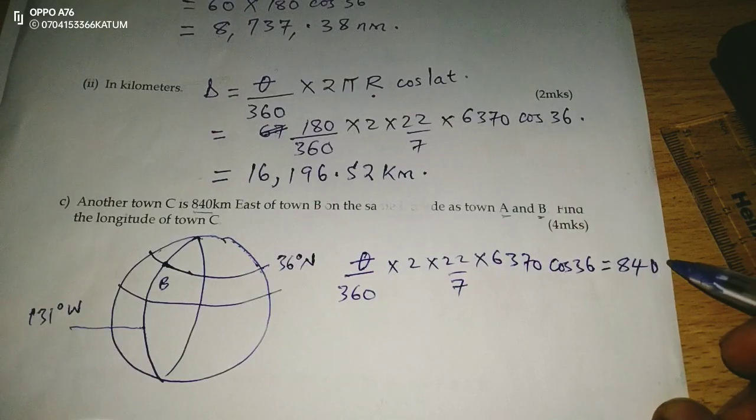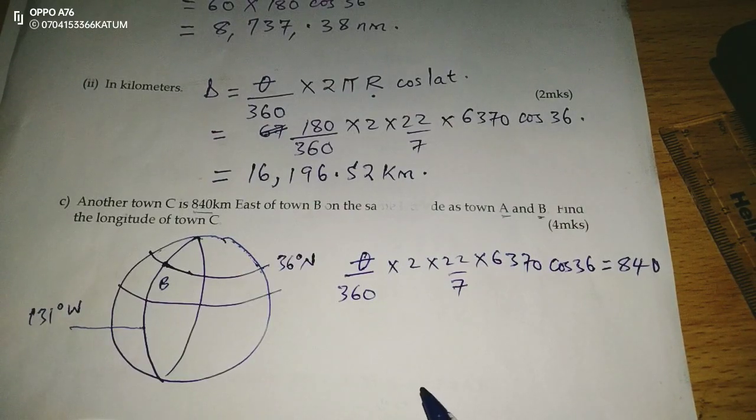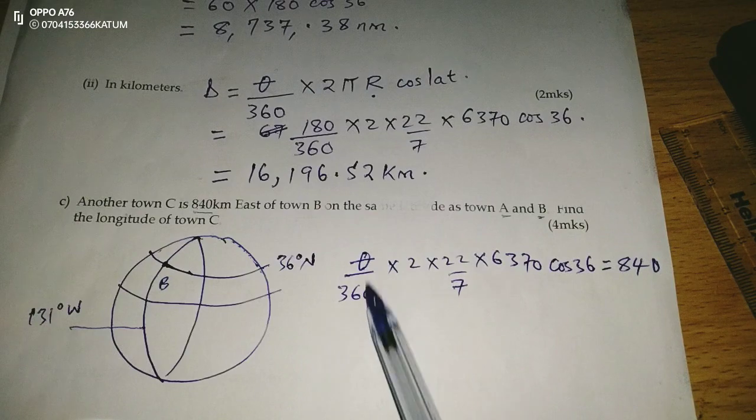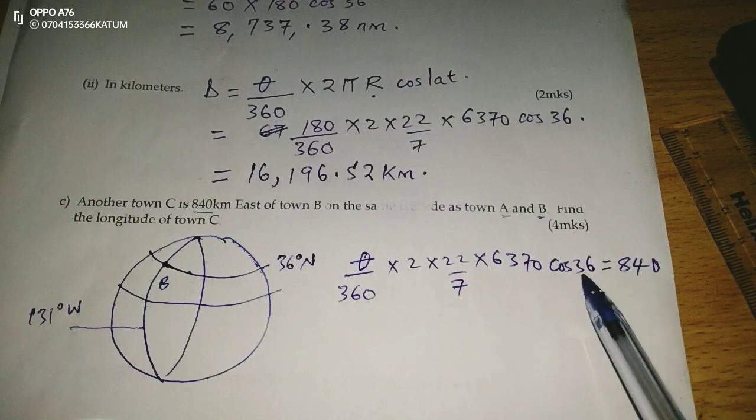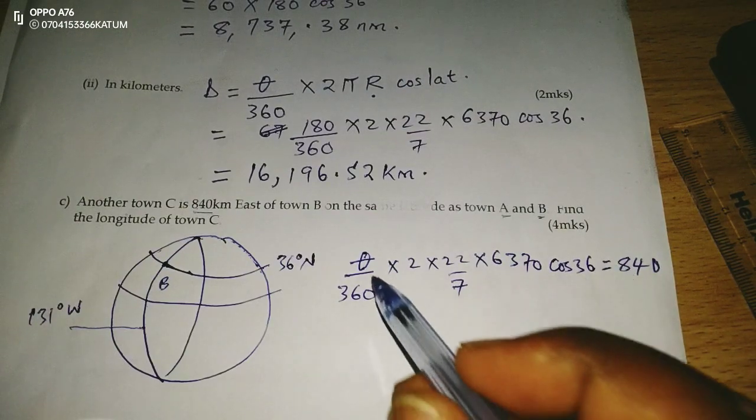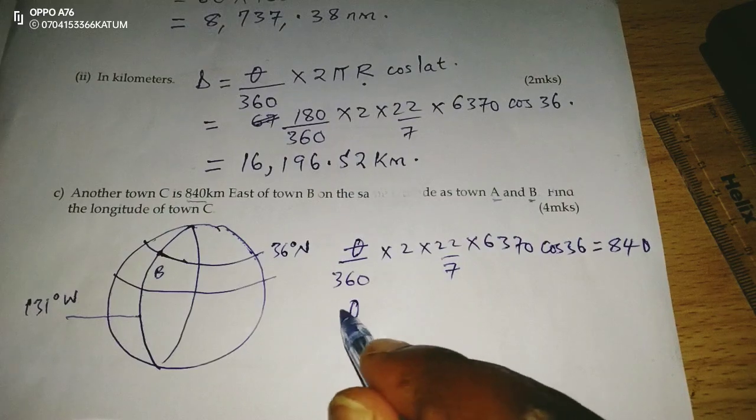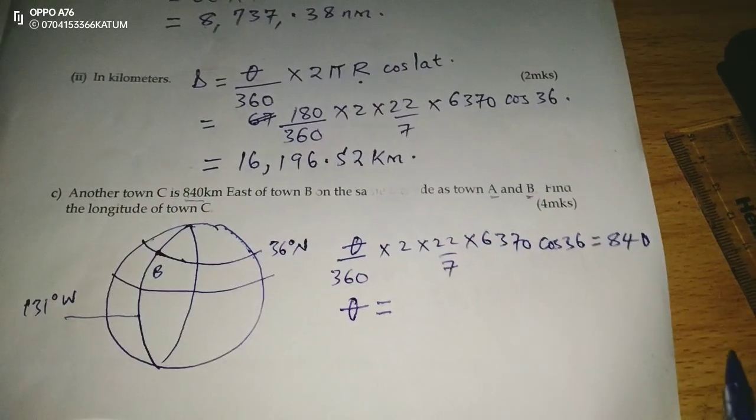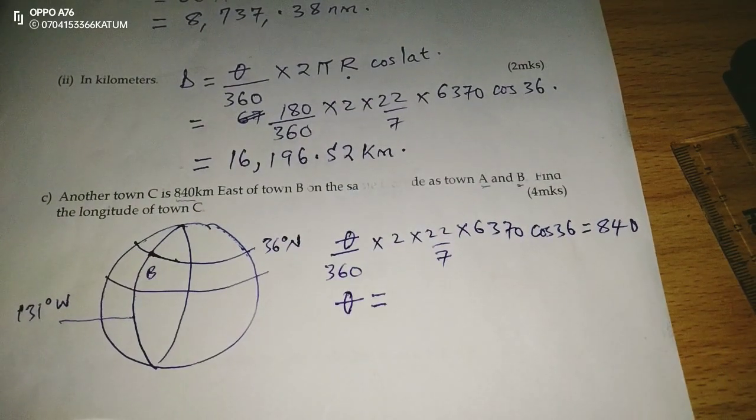This should give us 840, the distance between points B and C. Distance is given by theta over 360, 2 pi R, cosine of latitude. So we can get theta.